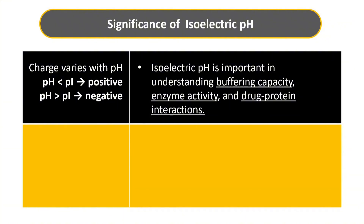Enzymes are proteins whose active sites have charged amino acids that depend on their isoelectric pH relative to the surrounding pH. If the pH is far from the isoelectric pH, the net charge on the amino acids will change, altering enzyme conformation or active site chemistry and resulting in decreased activity. For example, pepsin found in the stomach has an isoelectric pH of 1 — acidic — so it works best in the stomach's acidic medium. Similarly, trypsin found in the intestine has an isoelectric pH of 10 and works in the alkaline intestine.